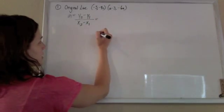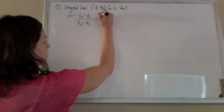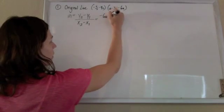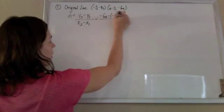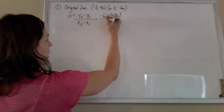So just plugging stuff in, I got minus 6a minus negative 4a all over 3 minus negative 3.